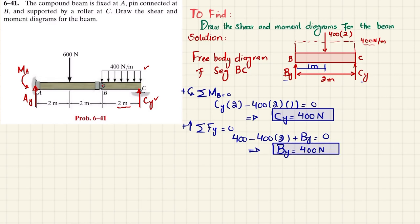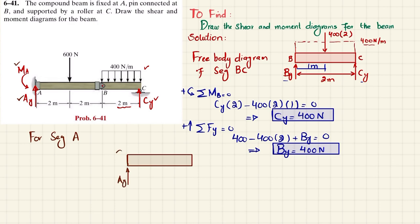Now we take segment AB. For segment AB, we need to find AY and MA. Drawing the free body diagram of segment AB: there is a reaction force AY and a moment MA at point A, and an external load of 600 Newton applied 2 meters from A.